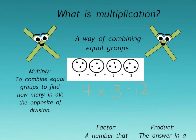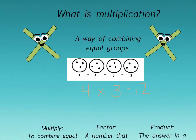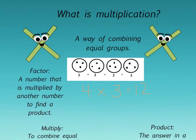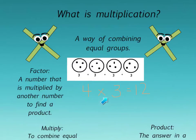We're combining equal groups like this example right here to find how many in all. Now let's look at the next word: factor. A factor is a number that is multiplied by another number to find a product. Here's an example multiplication problem — the factor here is four and the other factor is three.